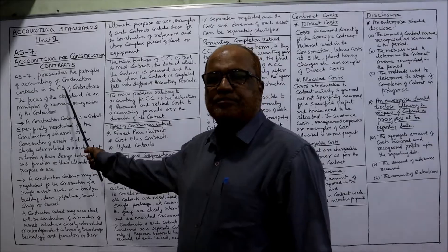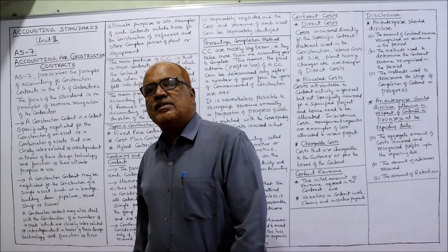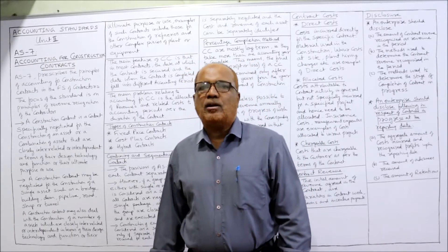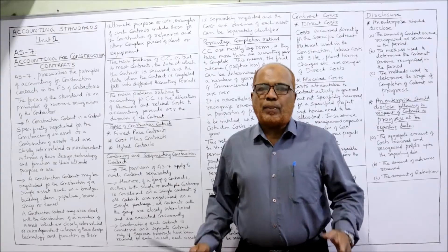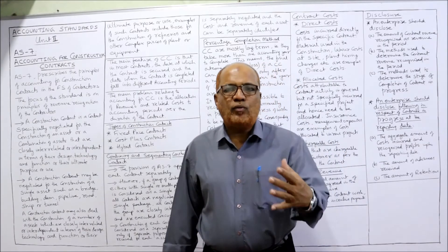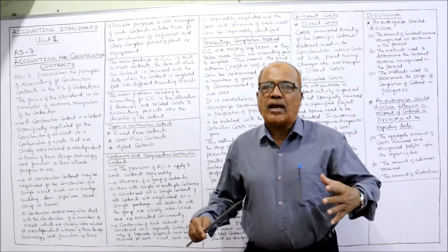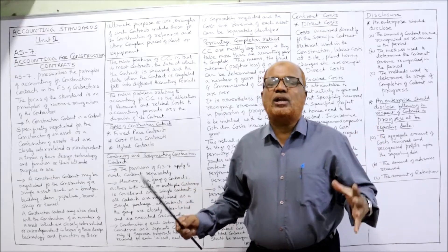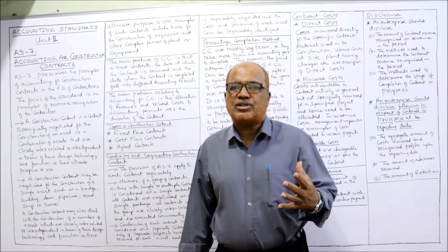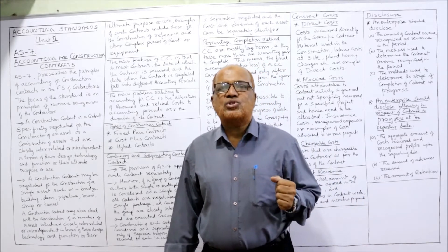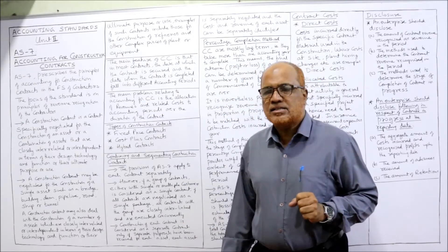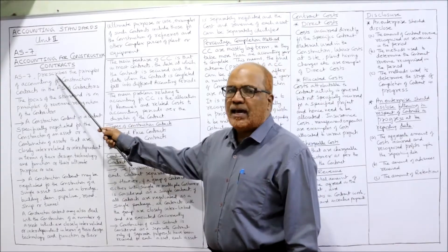AS 7's title is 'Accounting for Construction Contracts.' The purpose of this accounting standard is to help contractors who are engaged in construction activity to understand how to present the financial statements of a construction business.